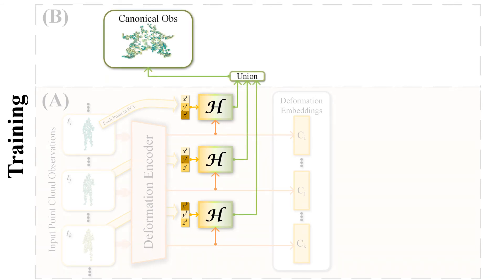For every point in the point cloud observation from each frame, we use the homeomorphism to transform them all to the canonical space and directly do a set union to form a canonical observation in the canonical space.